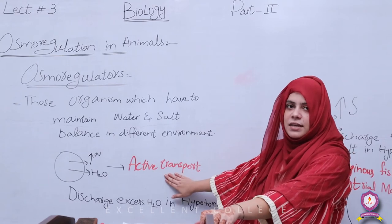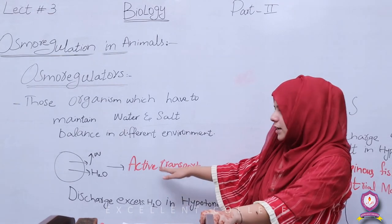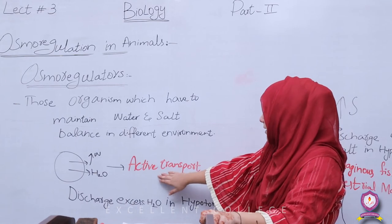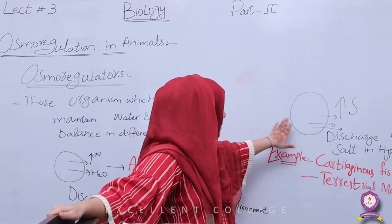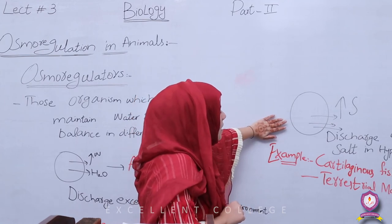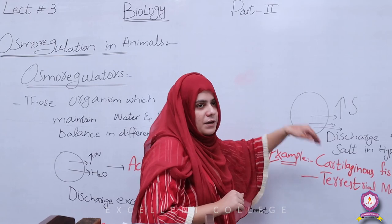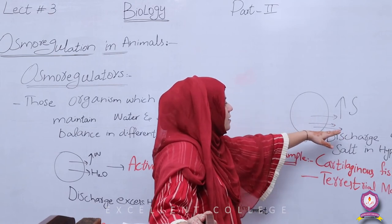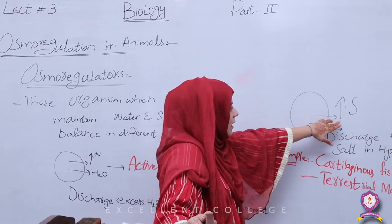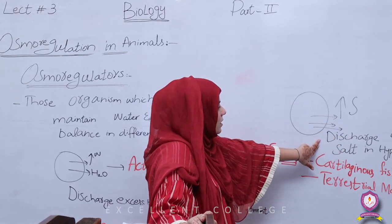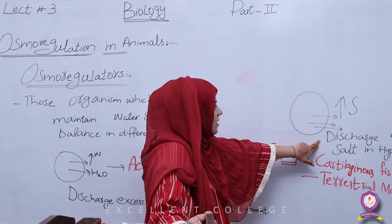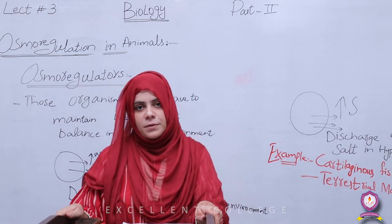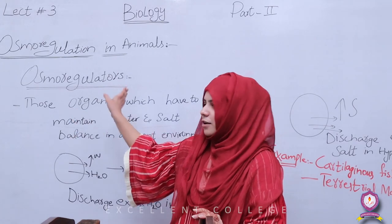So we have to discharge the amount of water through active transport। If water concentration is high, water will be released। If we talk about salts, then discharge the exact salts in hypertonic environment। Hypertonic environment means salts are more। So this is all for today's lecture — Osmo Regulation in Animals। Thank you। Allah Hafiz।